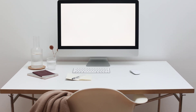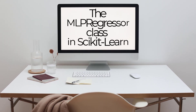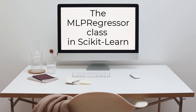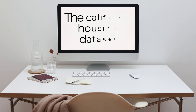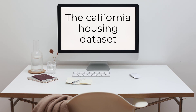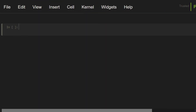To solve the regression problem, we're going to use the MLPRegressor class in Scikit-learn. To show this, let's use the California Housing dataset. This dataset includes house prices. Our goal is to build a model that will predict the price of a house based on its features. To load this dataset easily, we can call the fetch_california_housing function. First, let's import this function.